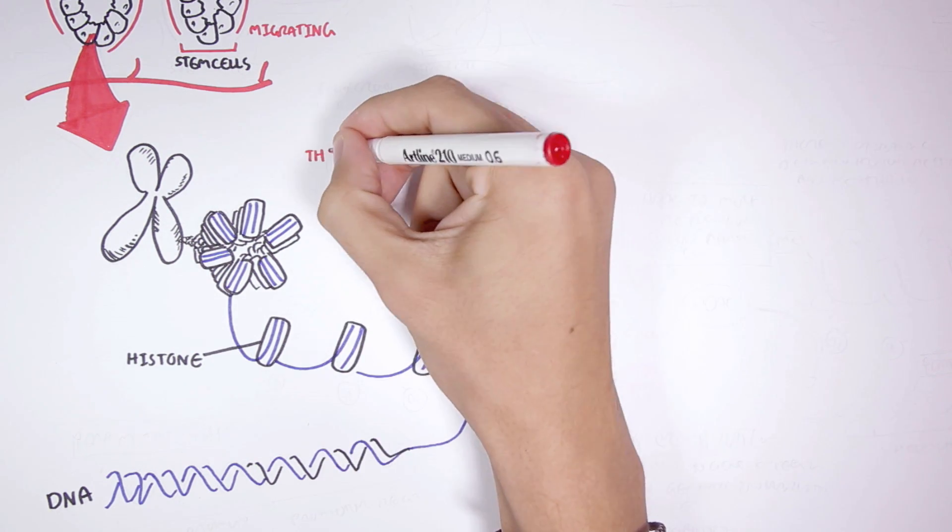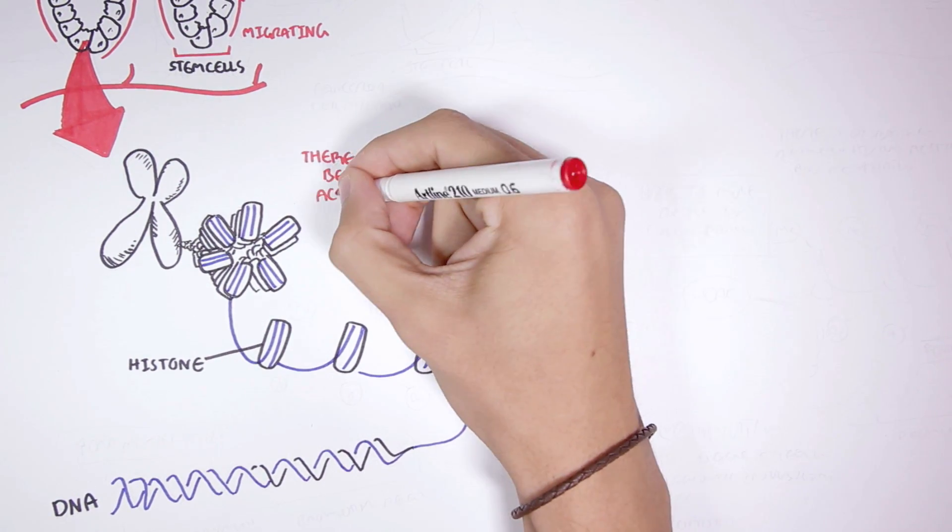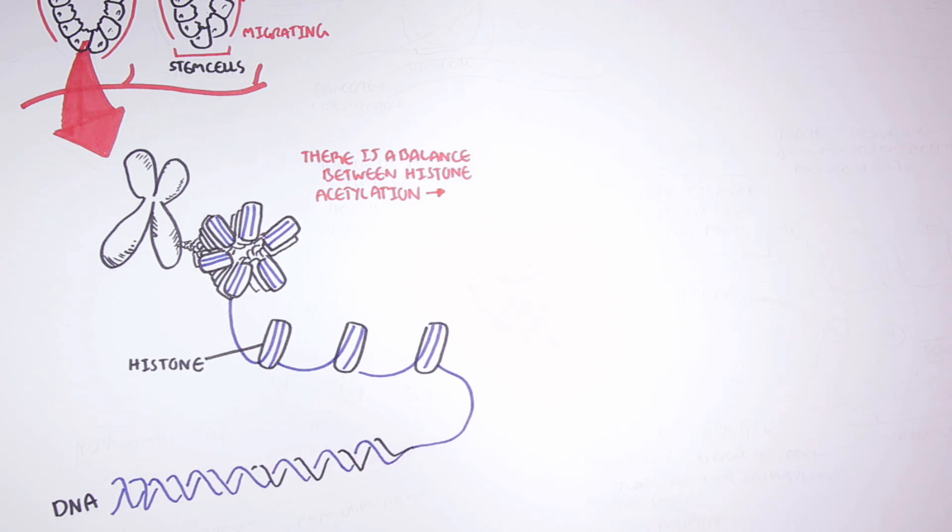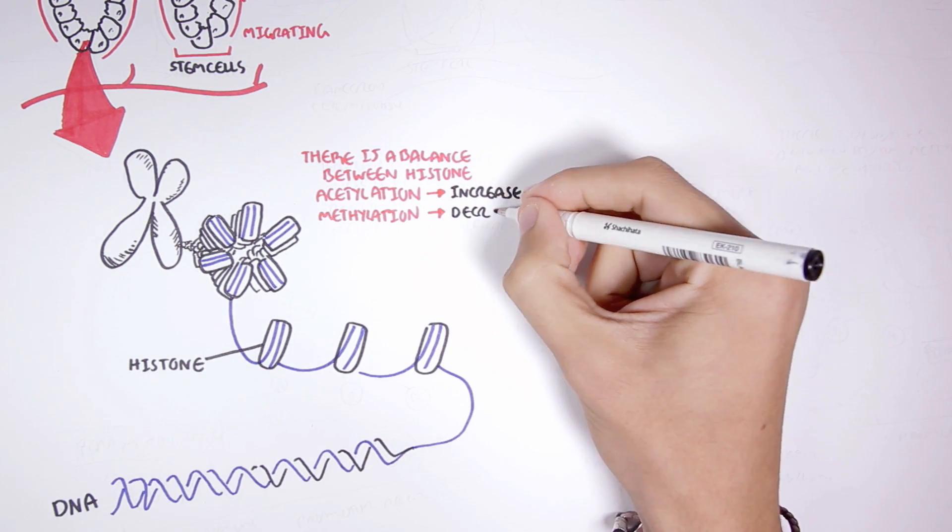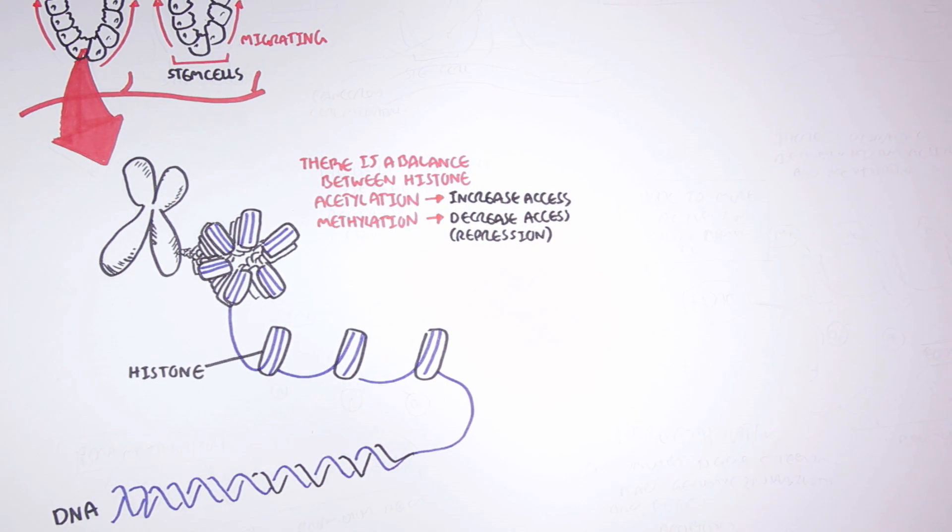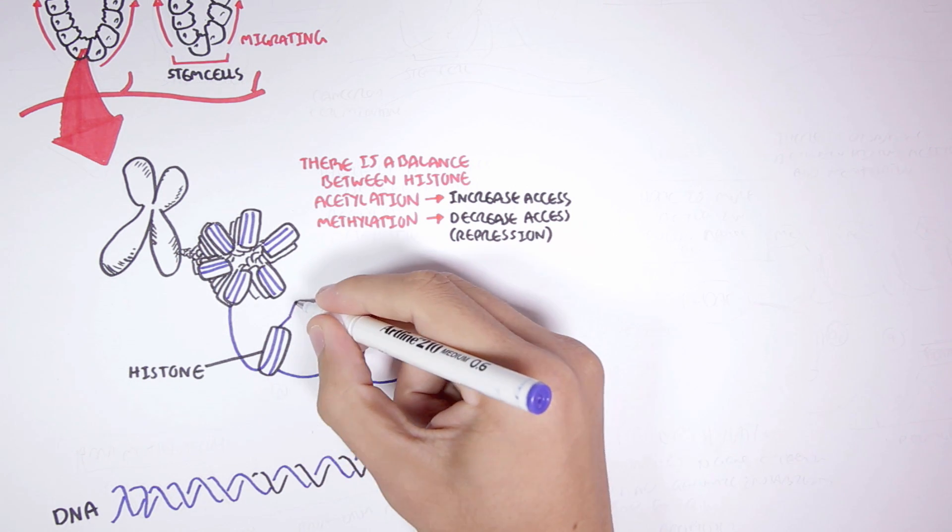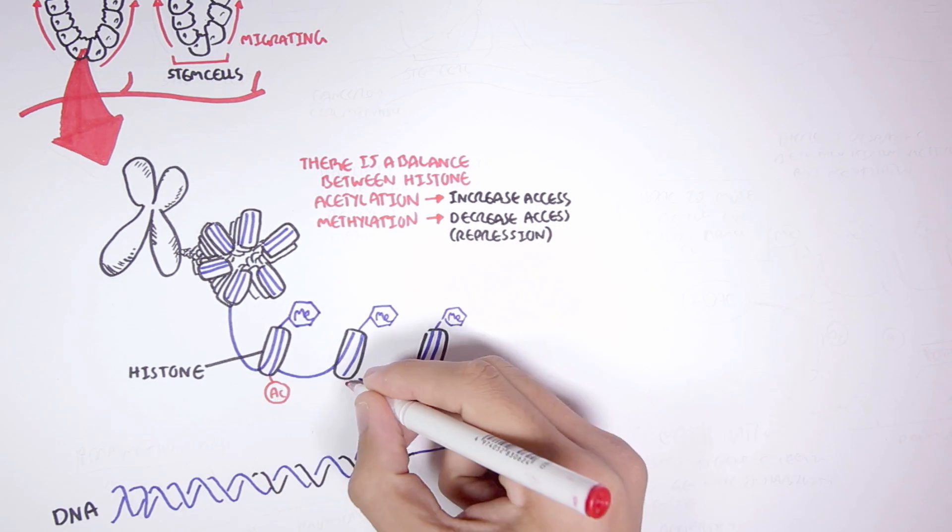In a normal colon cell there is a balance between histone acetylation and histone methylation. Histone acetylation means there is better access for transcription factors to the DNA. Histone methylation means there is decreased access for transcription factors to the DNA, so there is repression. Therefore if there is a lot of histone methylation, certain genes may not be activated. Looking at the histones here, we have a balance between histone methylation ME and histone acetylation AC.